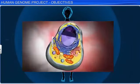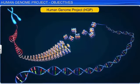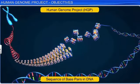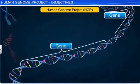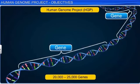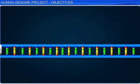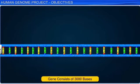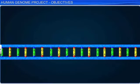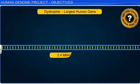An ambitious international scientific research project called the Human Genome Project or HGP set out to determine the complete sequence of base pairs of DNA inside the human genome. More precisely, the HGP aimed to identify approximately 20,000 to 25,000 genes in human DNA. The average gene consists of 3,000 bases. However, gene sizes vary greatly. Did you know that dystrophin is the largest known human gene, which has 2.4 million bases?